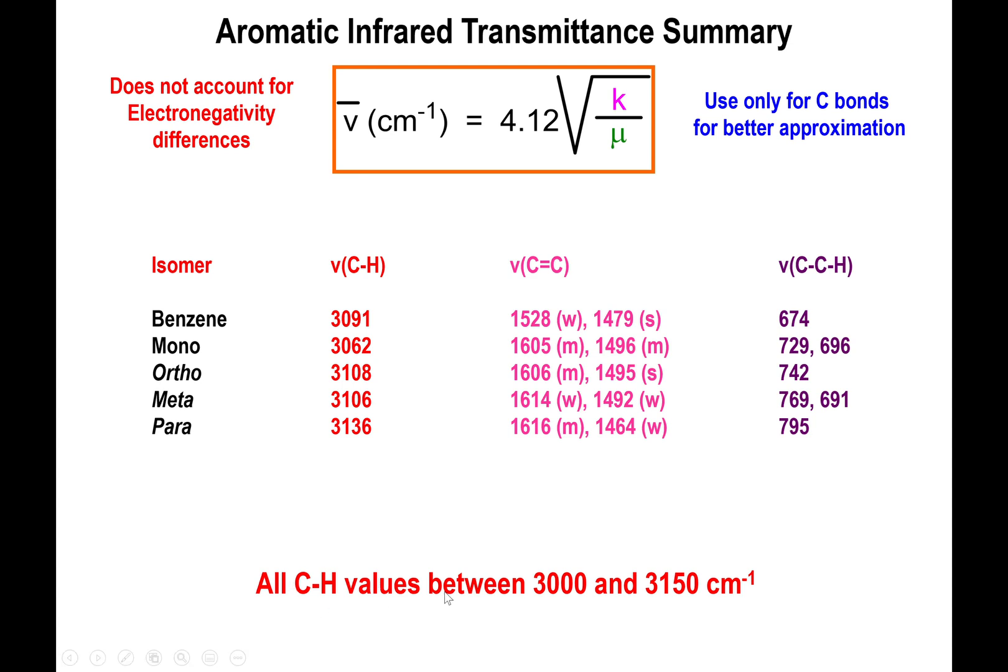All right, so as I pointed out before, all the values for the CH bonds on the unsaturated carbons fall above 3000 as expected, but we're going to try to explain what's going on with these 1400-1500 peaks.